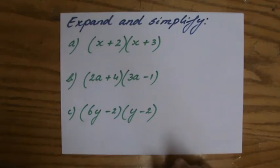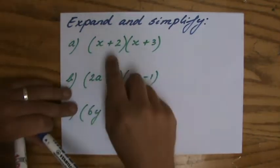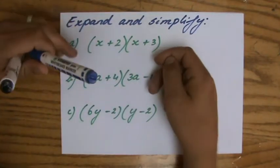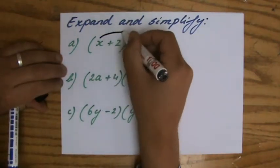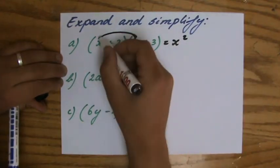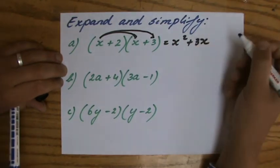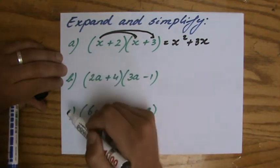When expanding two sets of brackets, I have to multiply these terms with those terms. What is that going to look like? I do x times x and that is going to be x squared. I'll do x times 3 and that is 3x, so I've multiplied x and 3 by x.